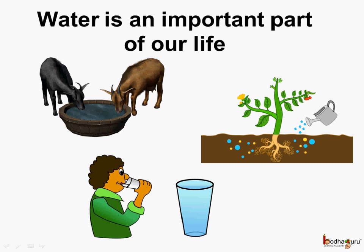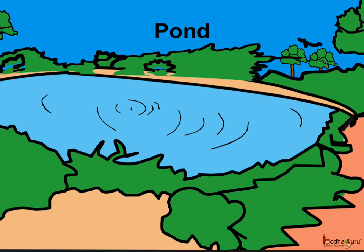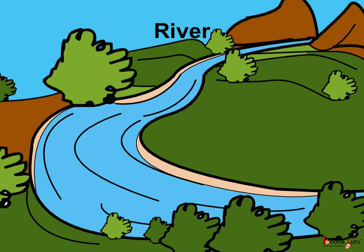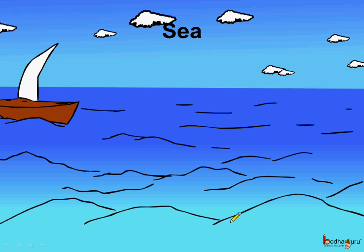Now where all can we find water? Water is found in ponds, then lakes, rivers and also sea and ocean.